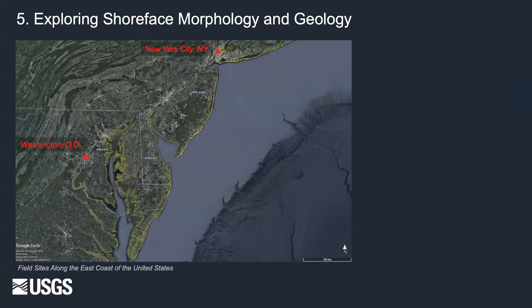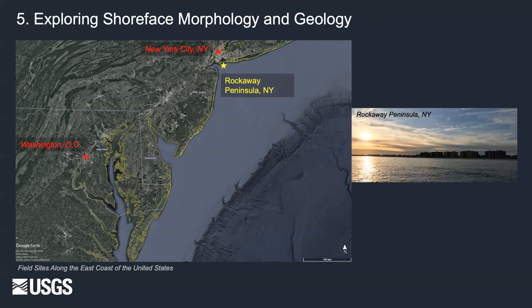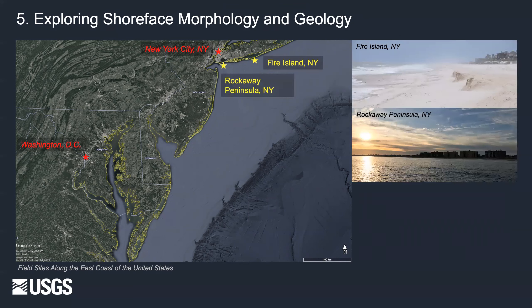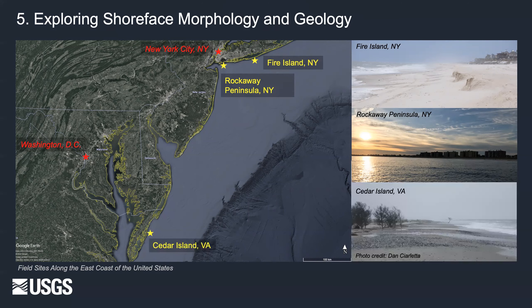So where did we do all of this? This map shows the east coast of the United States, with New York City and Washington DC for orientation. We have three barrier island field sites distributed along this section of coast, all with varying levels of barrier behavior and human intervention. The first site is Rockaway Peninsula in New York, the developed end member, fixed in place with seawalls and groins and regularly nourished. The second site is Fire Island, New York, which is sparsely populated and regularly nourished but has few coastal engineering structures. The last site is the undeveloped end member, Cedar Island, Virginia, which has migrated landward approximately 15 to 30 meters per year since 1984 without any human alterations.